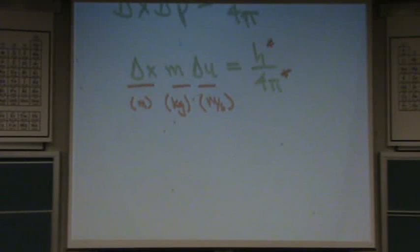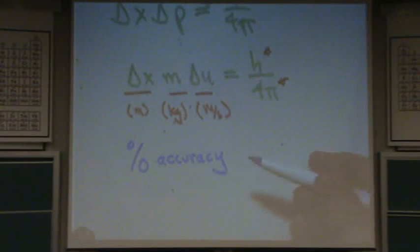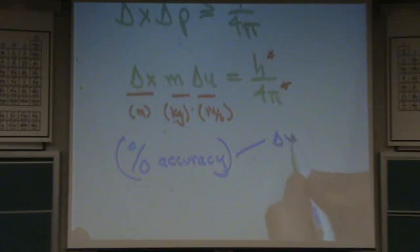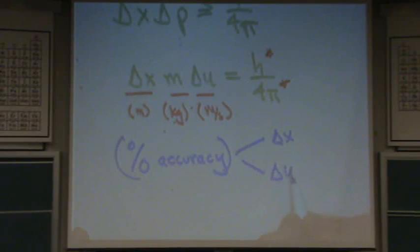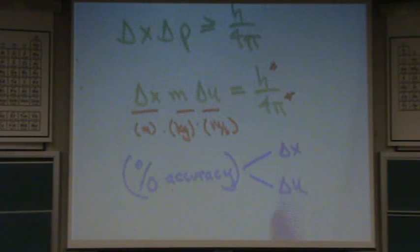Now the other thing, sometimes, I would say maybe usually, you're going to get also a percentage. So you'll get something that says percent accuracy. Not in 100% of problems, but quite often. You need to read. This will either go with the change in x or it'll go with the change in u, the change in velocity. You need to read the question, just use your English skills to see which one it goes with. And then you multiply this number with the one it goes with.